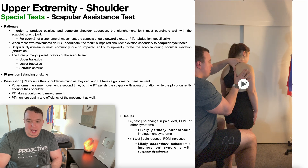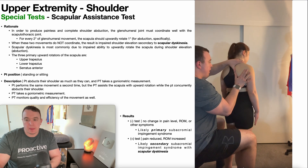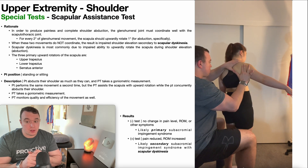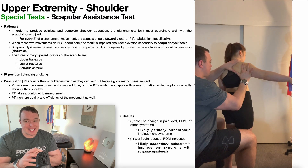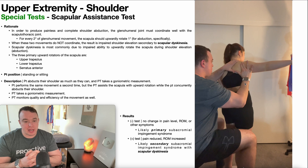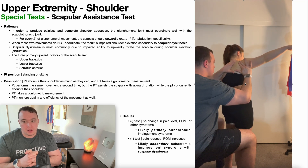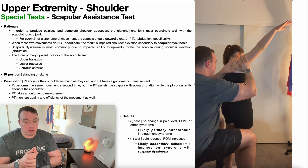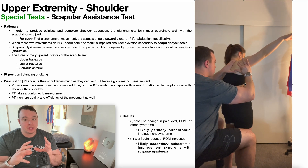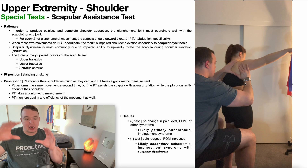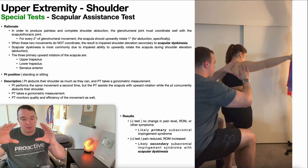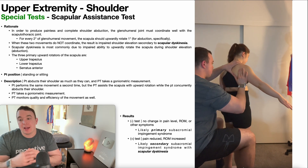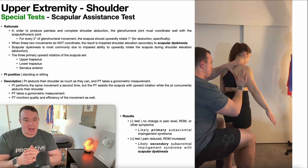So they're abducting their shoulder and I am assisting that upward rotation of the scapula. They go as high as they can, and then once they're at the peak of the movement, you're not just going to let go of the scapula — you're also going to allow passive downward rotation, more eccentrically, as they lower their arm back down.